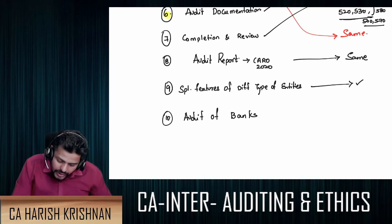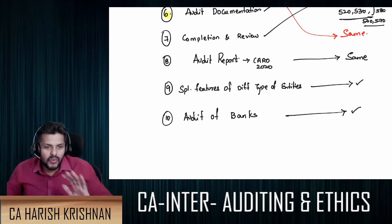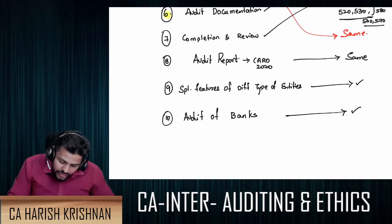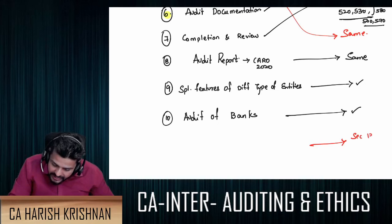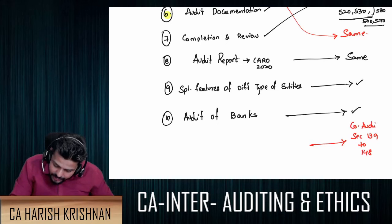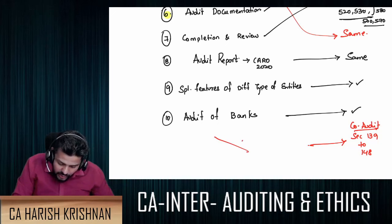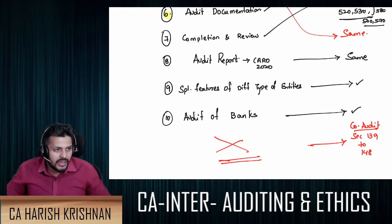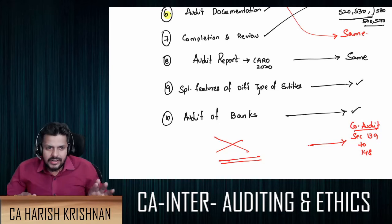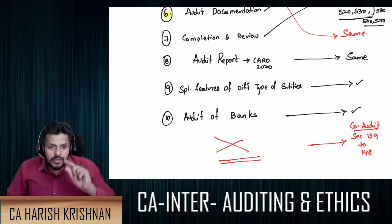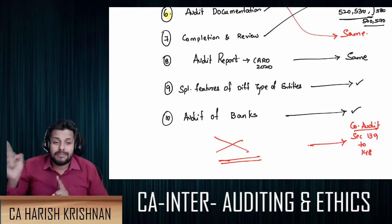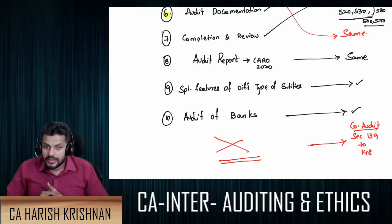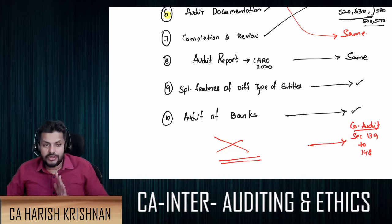Chapter 10 is audit of banks, which is also the same. What happened is that in the past, sections 139 to 148 — called company audit provisions — which were very much there in the audit book, are now not there in the new syllabus. There's no harm in covering that since it's anyway part of law. Regarding audit of banks, the content is the same, but note that banking company accounts may not be there in the new syllabus accounting, so those who have already done that chapter are at an advantage.